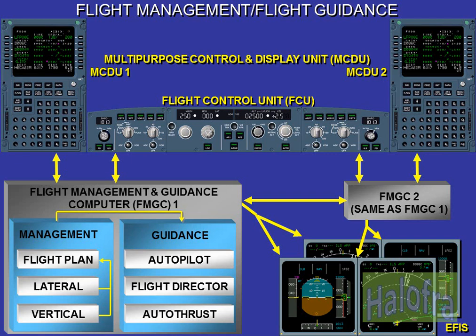Basically, the MCDUs provide the long-term interface between the crew and the FMGCs, e.g. flight plan selection and modification, while the FCU provides the short-term interface, e.g. engagement of the autopilot, flight director, and autothrust functions. Besides the MCDUs and the FCU, the main displays presenting flight management and guidance information are the EFIS displays.